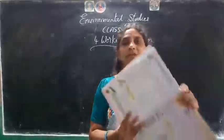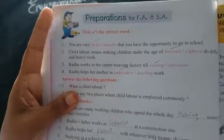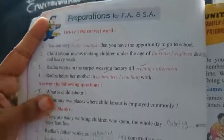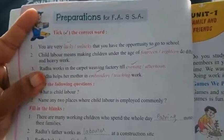Everyone see the exercises and think of the correct answers. You are very lucky that you have the opportunity to go to school. Child labor means making children under the age of 14 do difficult and heavy work. For example, Rather works in the carpet weaving factory till evening, and Rather helps her mother in embroidery work.